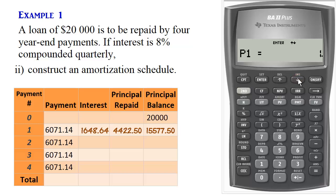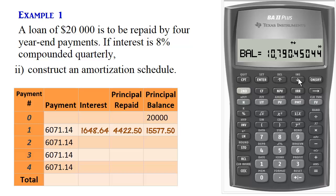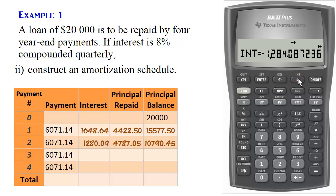We continue by scrolling down and setting P1 to two, press Enter, scroll down, and set P2 to two as well, press Enter. We then use the balance shown to populate the balance cell for period two, along with the principal repaid in period two and the interest.